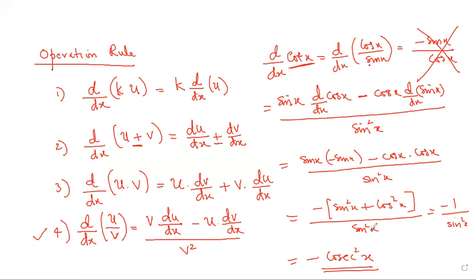Unless you apply the fourth rule — the quotient rule — when differentiating a division of two functions, you cannot get the answer correct. Please note down this formula.